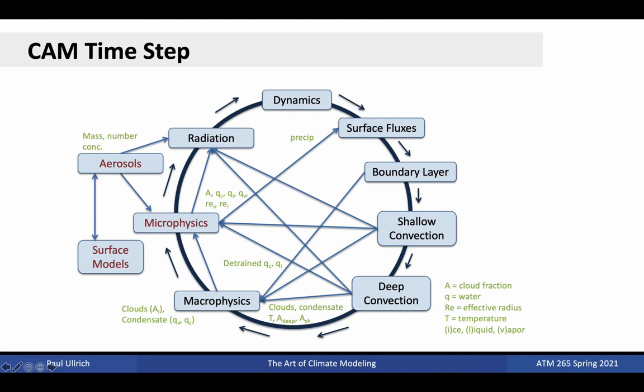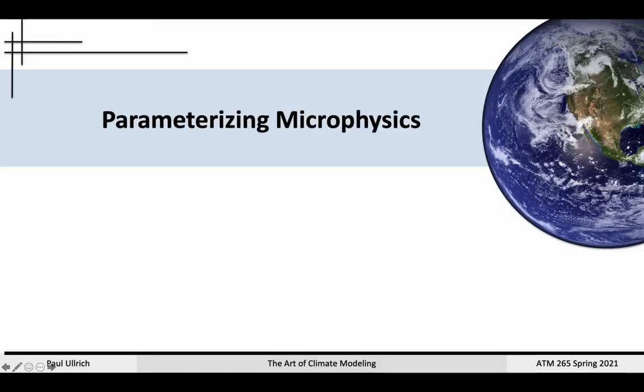The former include turbulence, convection, and macrophysics, and include parameters that need to be adjusted depending on the grid scale. The latter are the focus of this lecture. Among those parametrizations that are always on, the first we'll discuss today is the microphysics parametrization.